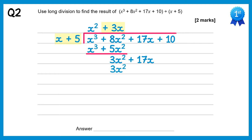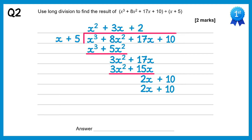Do 3x squared divided by x which is plus 3x, then multiply plus 3x back through: 3x times x is 3x squared, 3x times plus 5 is plus 15x. Now subtract: 3x squared take 3x squared is 0 and 17x take 15x is 2x. Bring down the final term, that's plus 10. Do 2x divided by x which gets plus 2, multiply back through: 2 times x is 2x and 2 times plus 5 is plus 10. Subtract these and you'll get 0. So the answer is x squared plus 3x plus 2.